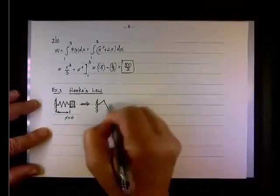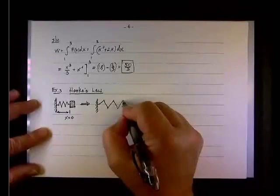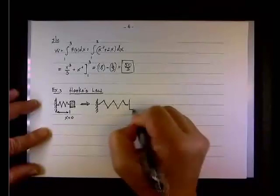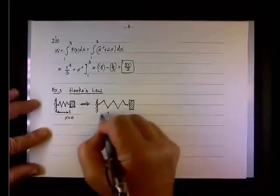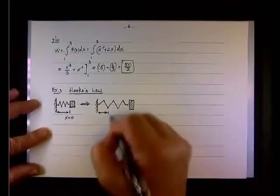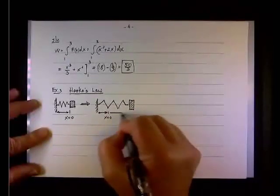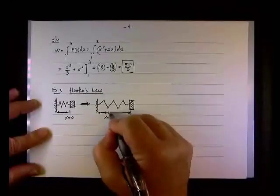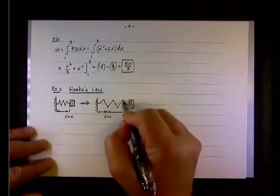All right, so let's stretch the spring a little bit, like so, so that the spring now is farther away from the wall. And the distance, the relative distance, if this was the natural position or the natural length of the spring, we stretch it by this amount, which we call X. Okay,